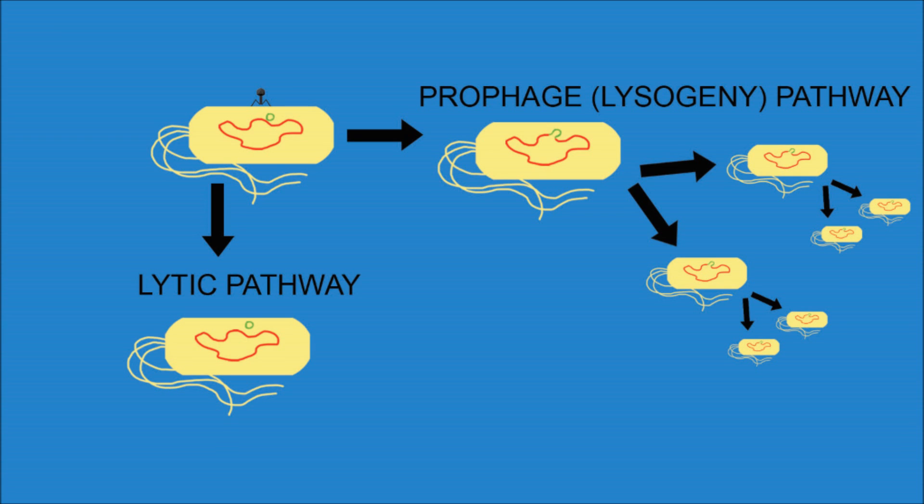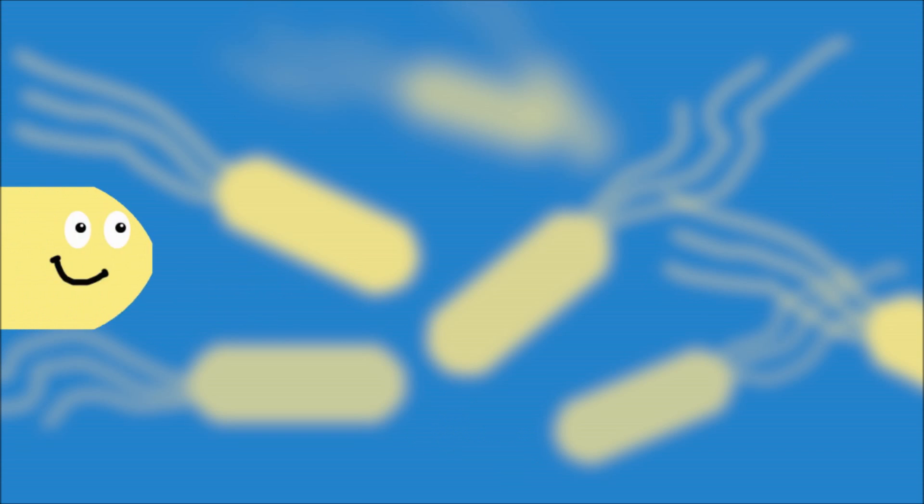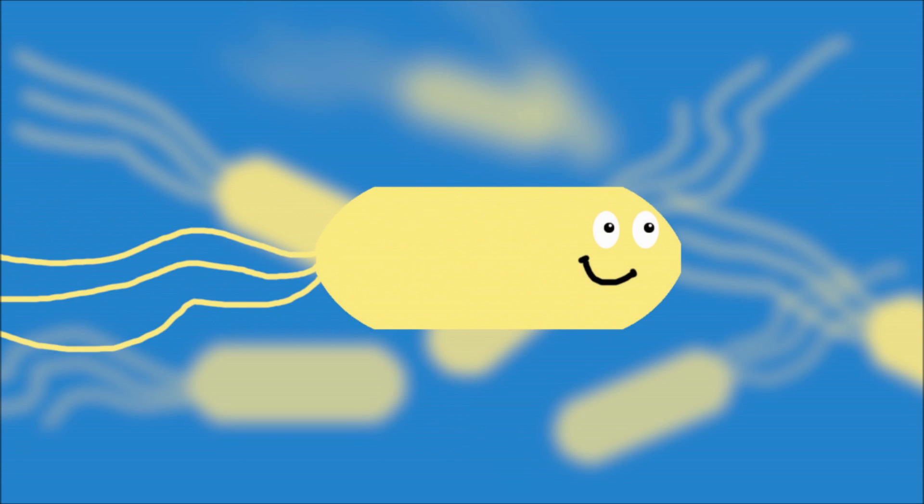However, in the lytic pathway, the circularized bacteriophage lambda DNA gets busy, using the cell's replication machinery to make many, many copies of itself. Then, one fine day as the E. coli is just swimming around, it senses that something is very wrong.